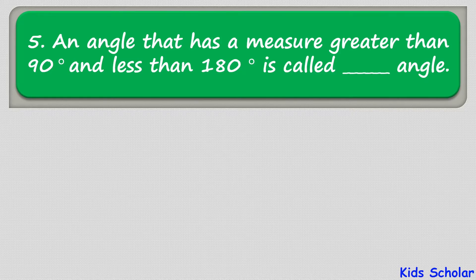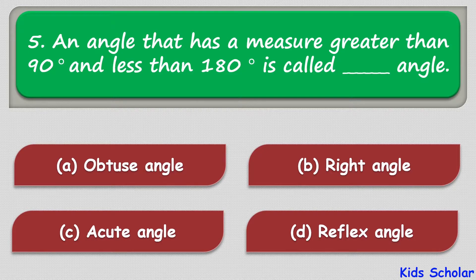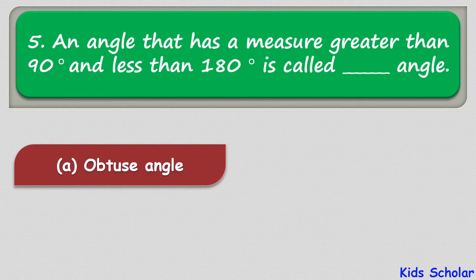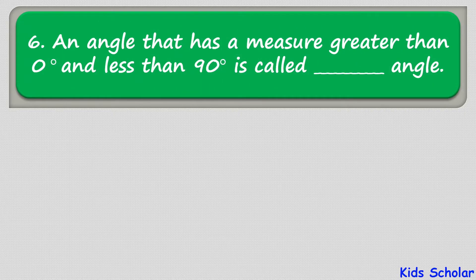The next question is: an angle that has a measure of greater than 90 degrees and less than 180 degrees is called — the options are obtuse angle, right angle, acute angle, and reflex angle. The correct answer is obtuse angle.